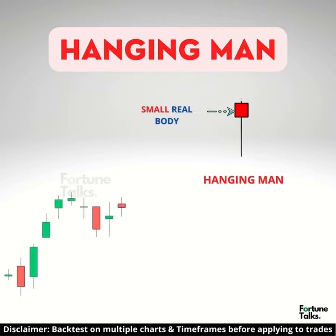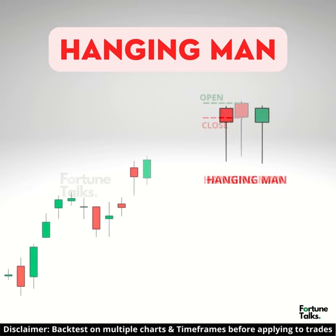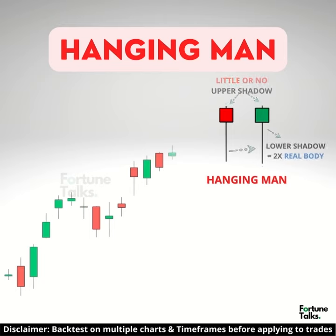The pattern has a small real body, which means that the opening and closing prices are very near. The real body can be either green or red, but this does not play a significant role. There is no upper shadow, and the lower shadow is at least twice the length of the real body.